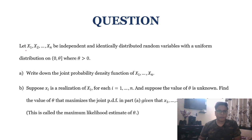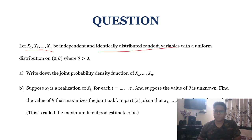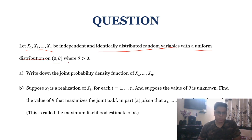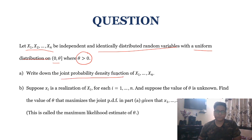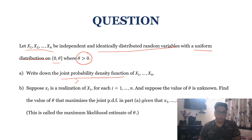Suppose there are n independent and identically distributed random variables with a uniform distribution on the open interval (0, θ), where θ is some positive number. In part A, the question asks about the joint probability density function of X₁ to Xₙ. In part B, suppose xᵢ is a realization value of the capital Xᵢ — basically, capital Xᵢ is your random variable.